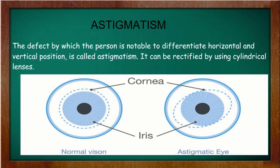Astigmatism is a defect where a person is not able to differentiate between horizontal and vertical positions. Any object's horizontal or vertical lines may not be visible clearly. It can be rectified by using a cylindrical lens, which allows the person to see both horizontal and vertical lines correctly.